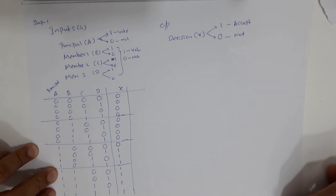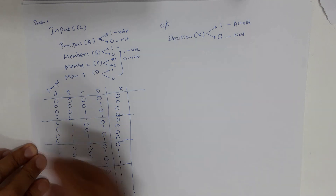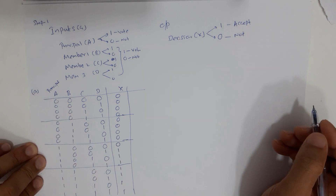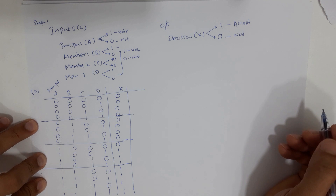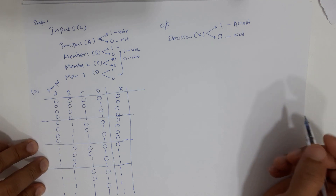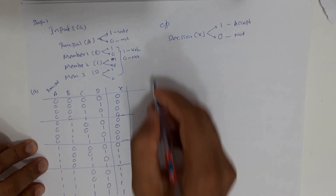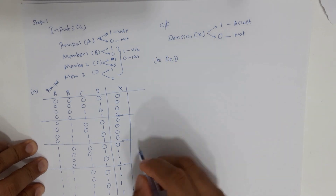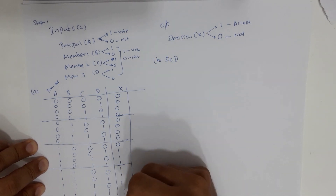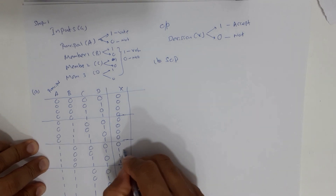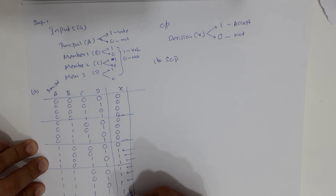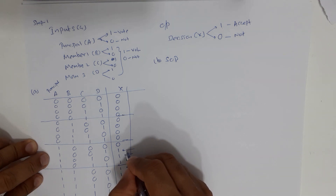That completes Part A. For Part B, we need to derive the SOP (Sum of Products) expression. To get the SOP expression, we consider the 1s in the output column. Each row with a 1 will produce a product term, and we sum all those product terms together.